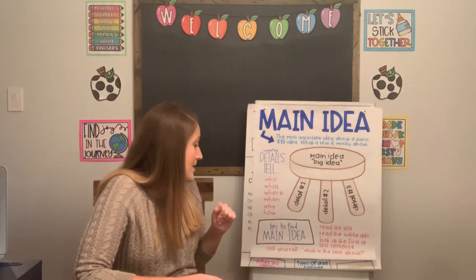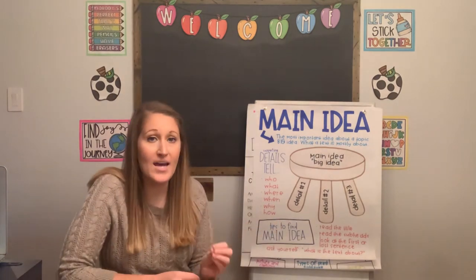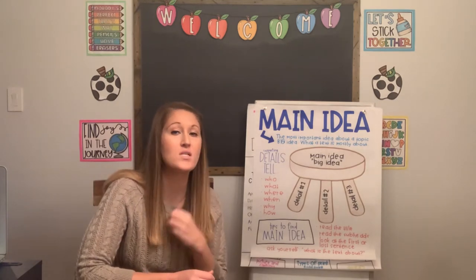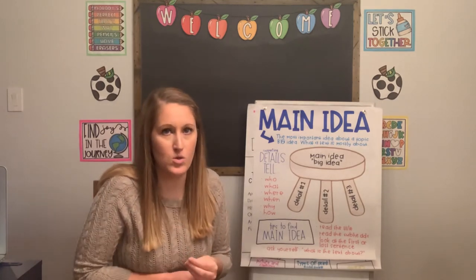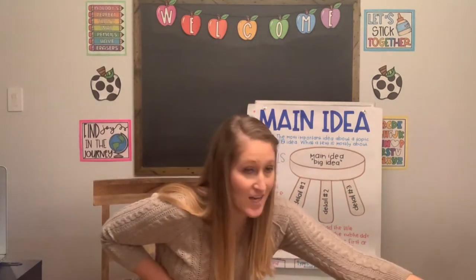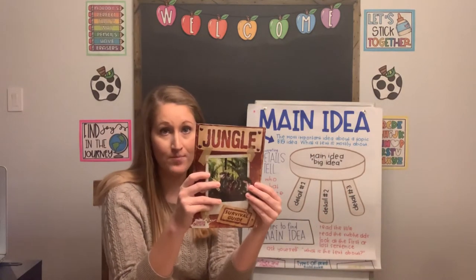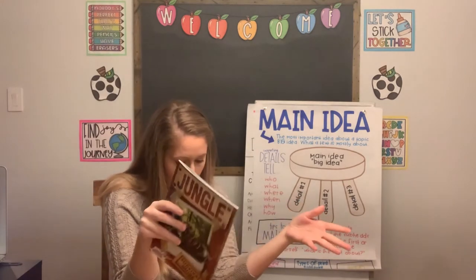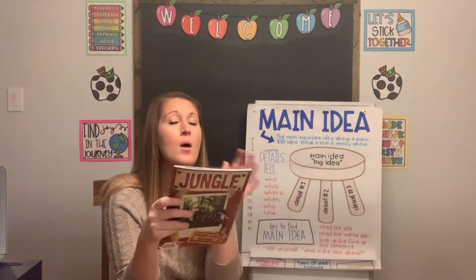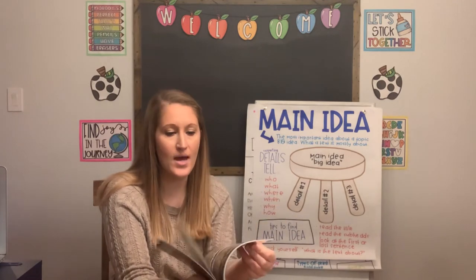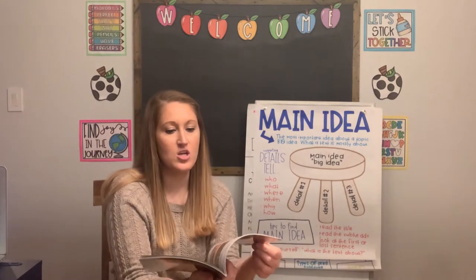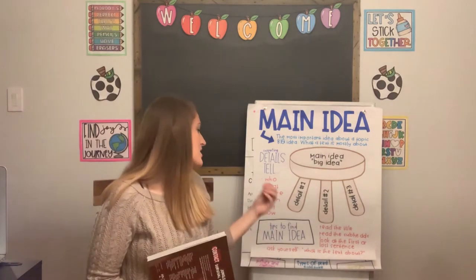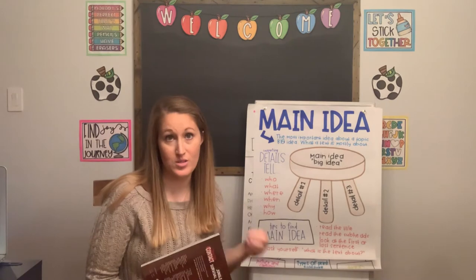Next, read the subheadings. Those headings and subheadings are going to give us a good idea about what some of those important topics we're going to learn about are. So yesterday we read the Jungle Book — it's all about the survival guide, and we've got to learn a lot of things. But when we start to look at some of the subheadings like jungle dangers, finding food, and fire, then I start to get more ideas about what I'm going to be learning about.